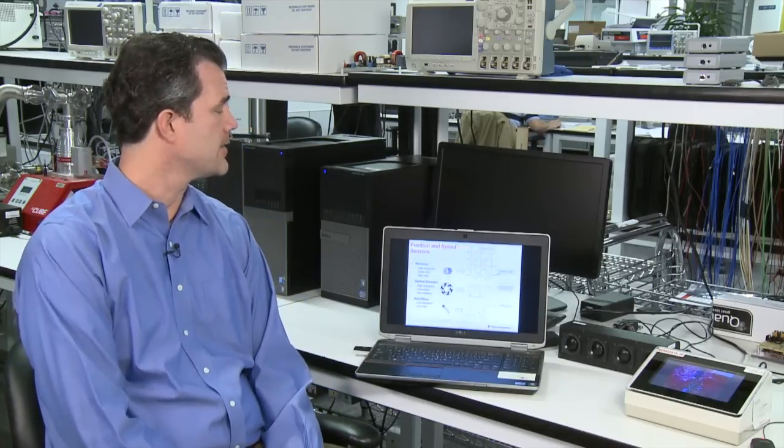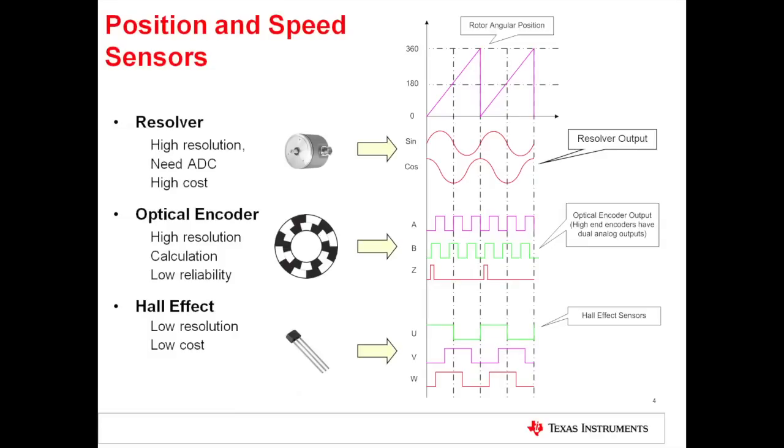Some of the more common sensors are resolvers, optical encoders, and hall effects. Resolvers are typically in military heavy industrial applications. They're fairly expensive, extremely high precision. Optical encoders are more popular but I would say hall effects for commutation are definitely the most popular at a lower cost. And again what these encoders do is they give you that rotor positional information so your system knows the position of the rotor and then it knows when to turn on those electromagnets.